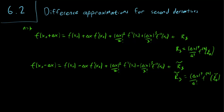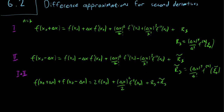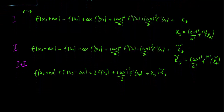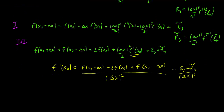So we have these two different versions of the Taylor series, and we add them together to obtain a combined equation. If we are looking for an approximation of the second derivative, we can solve for the f-double-prime x0 term, giving us: f-double-prime of x0 equals f(x0 + delta x) minus 2f(x0) plus f(x0 minus delta x), all over delta x squared.